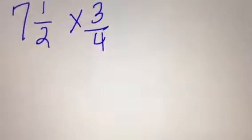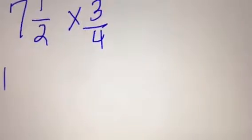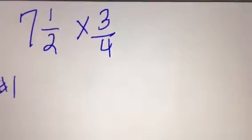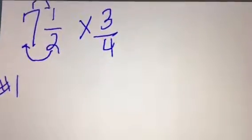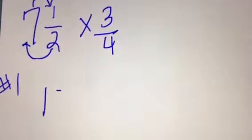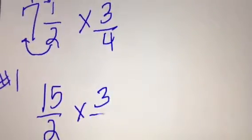Method one would have me convert the mixed number into an improper fraction. We do that by doing two times seven, which is fourteen, and then adding one. So I have fifteen over two times three-fourths.